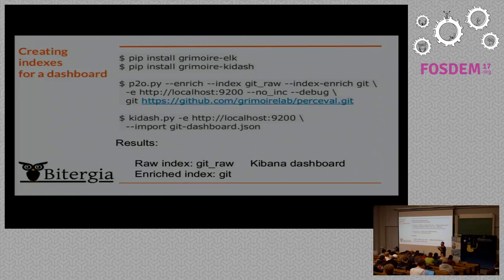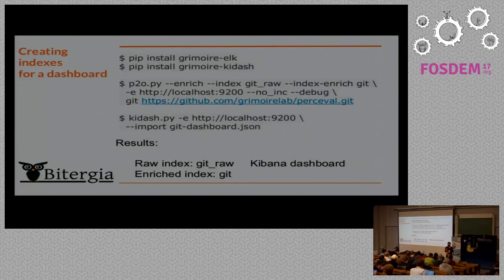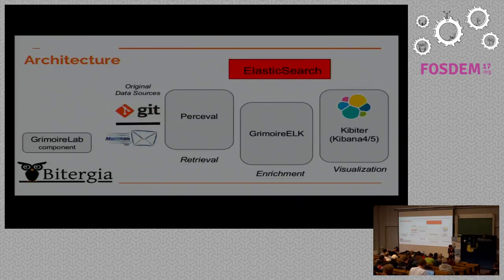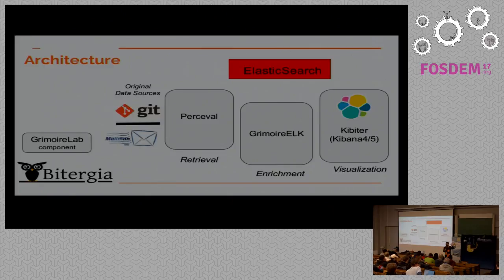You can do that for many repositories, since an index can include information from many different sources. If you run the same command again without the no-incremental option, it goes incrementally over the data source — asking for everything since the last time it retrieved information. It's very efficient and can be run every ten minutes to stay synchronized with a GitHub project. You can also use the information in Elasticsearch directly from Python, since in many cases you're not interested in a dashboard but want to get specific information or visualize it in another way.